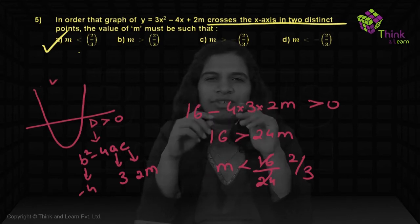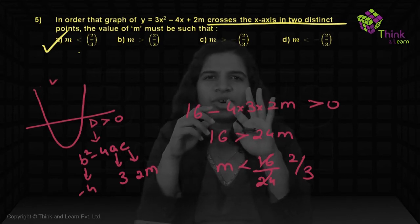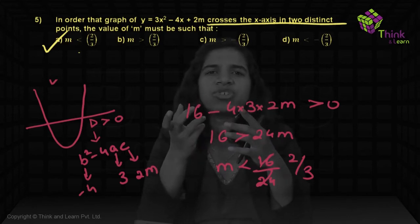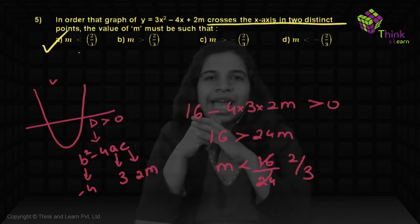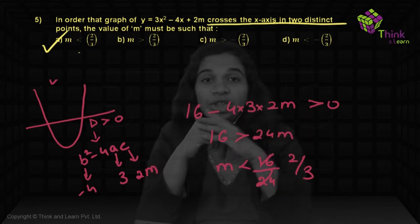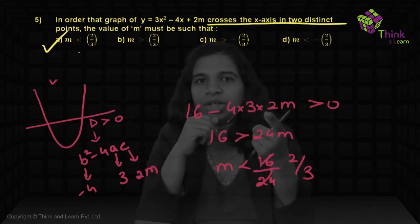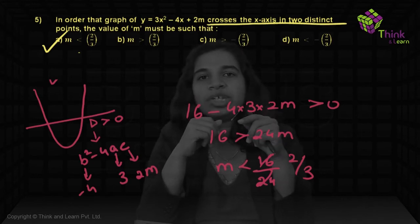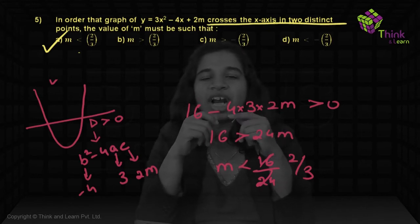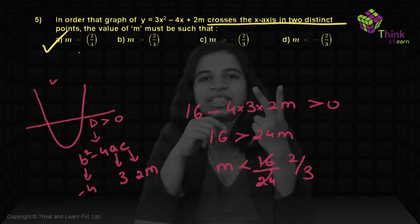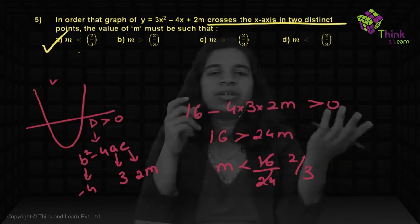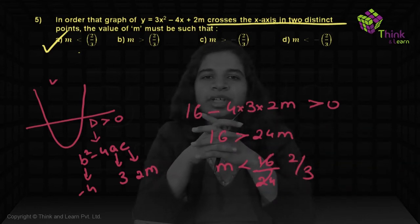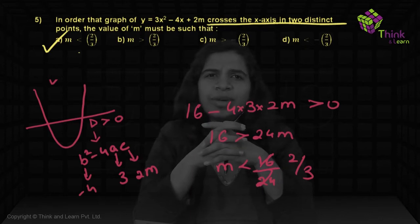Nature of roots questions require checking the value of D. The information that the graph crosses the x-axis at two distinct points is not stated directly as 'both roots are real' — you deduce that from the graph description, meaning D > 0. Those are the four types of questions: values of x, nature of roots, relation between roots and coefficients, and direct root finding.